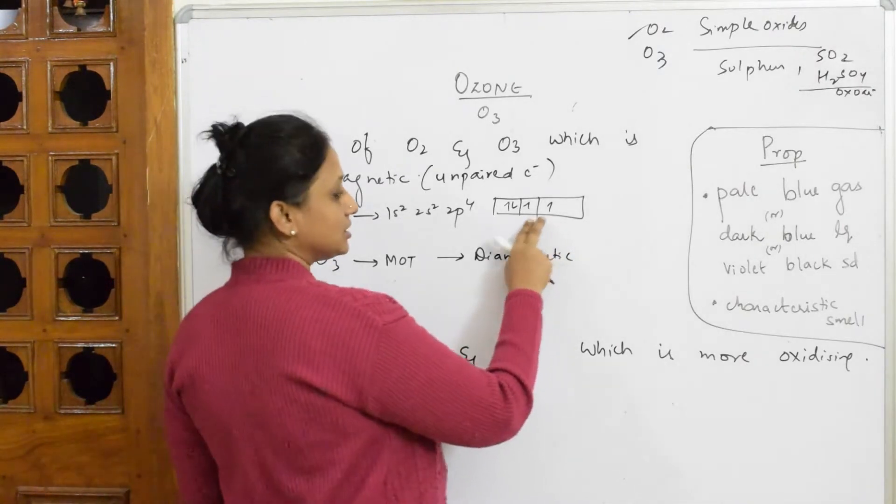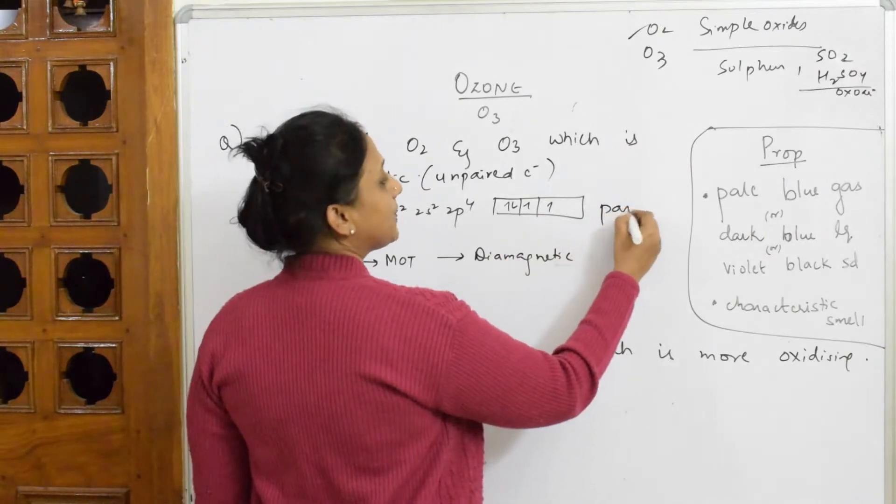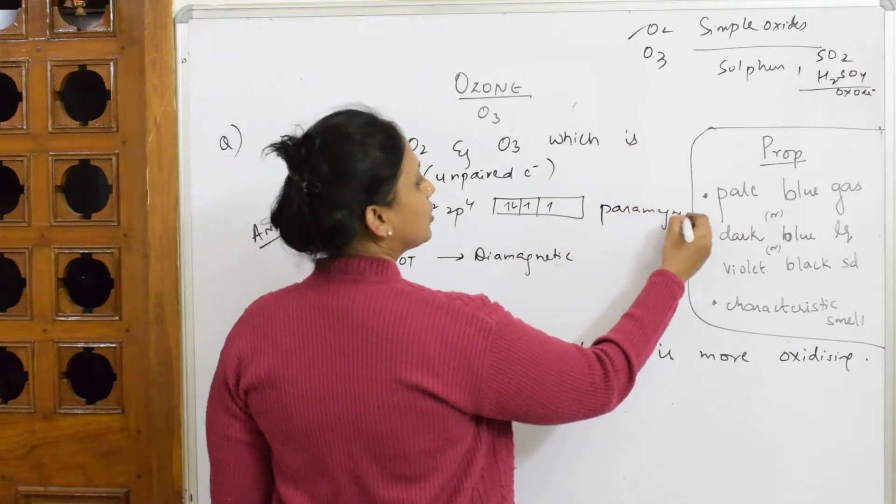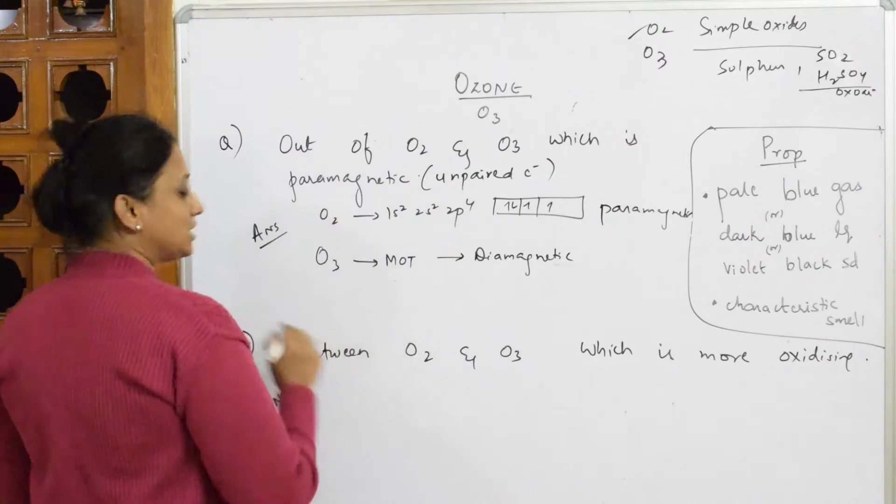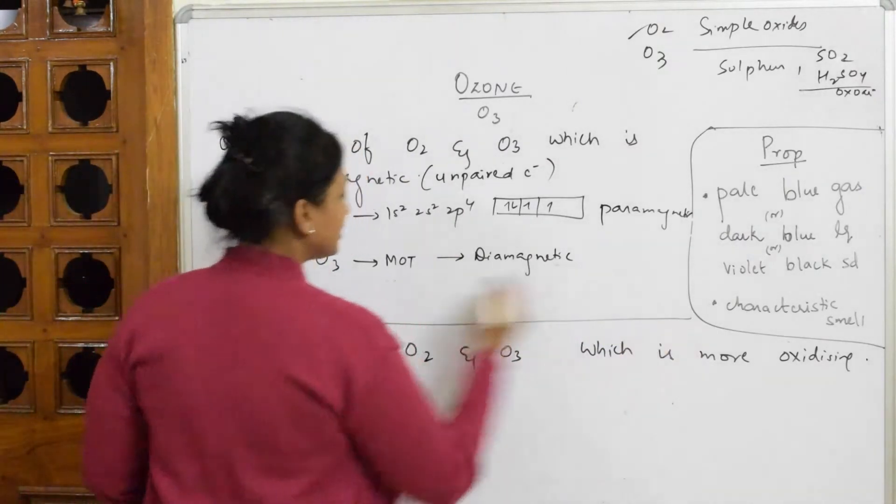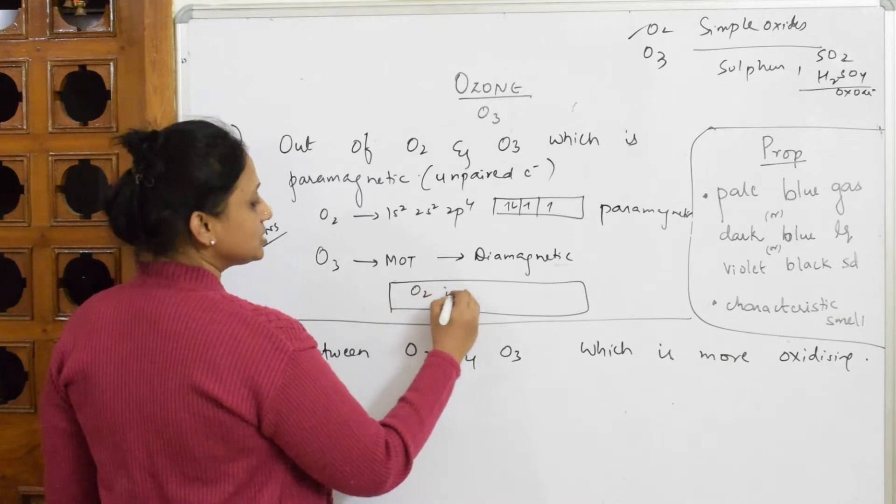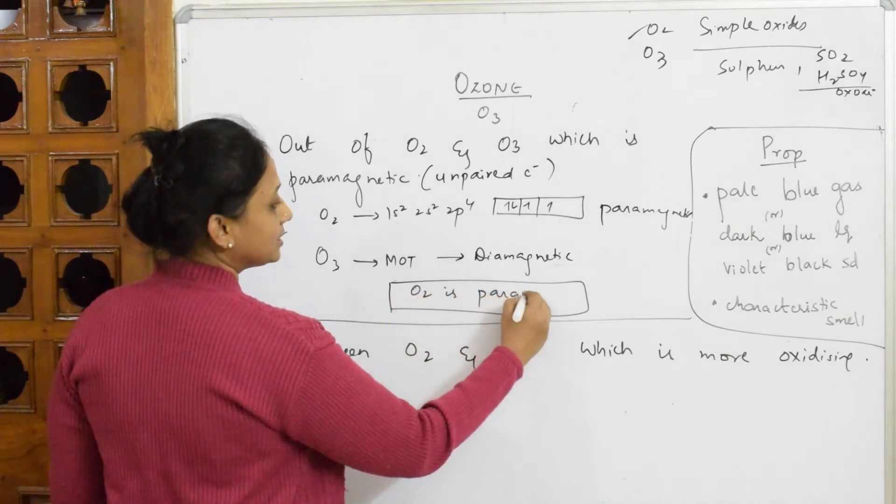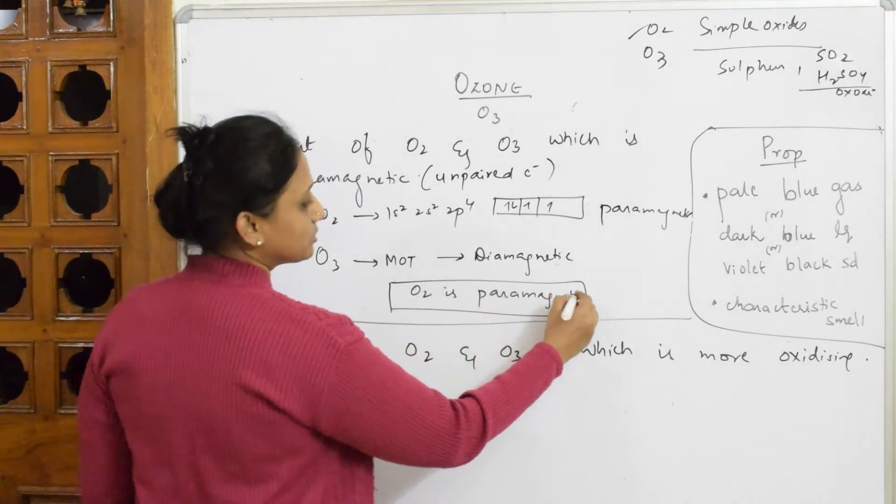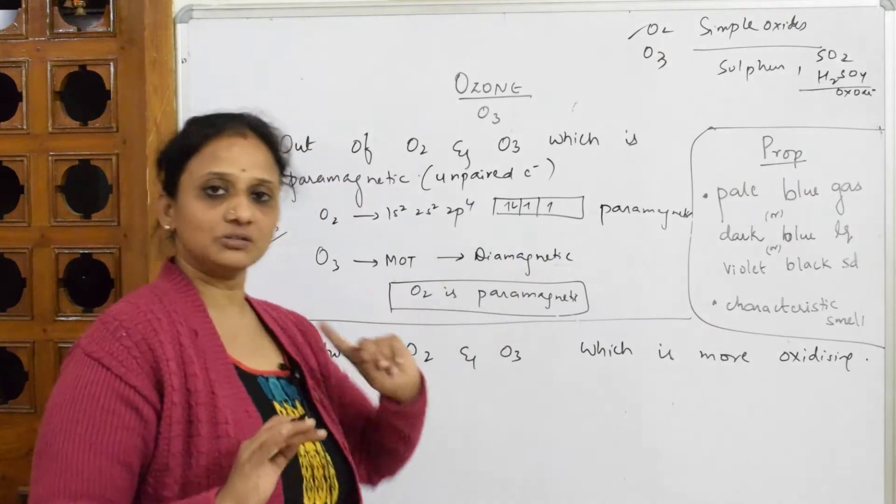But when I see this here, unpaired electrons, hence paramagnetic in nature. So according to the question given, what is paramagnetic and what is diamagnetic? I'm going to put it in a box and write, oxygen is paramagnetic in nature. This is your answer. Remember, oxygen, unpaired electrons, paramagnetic.